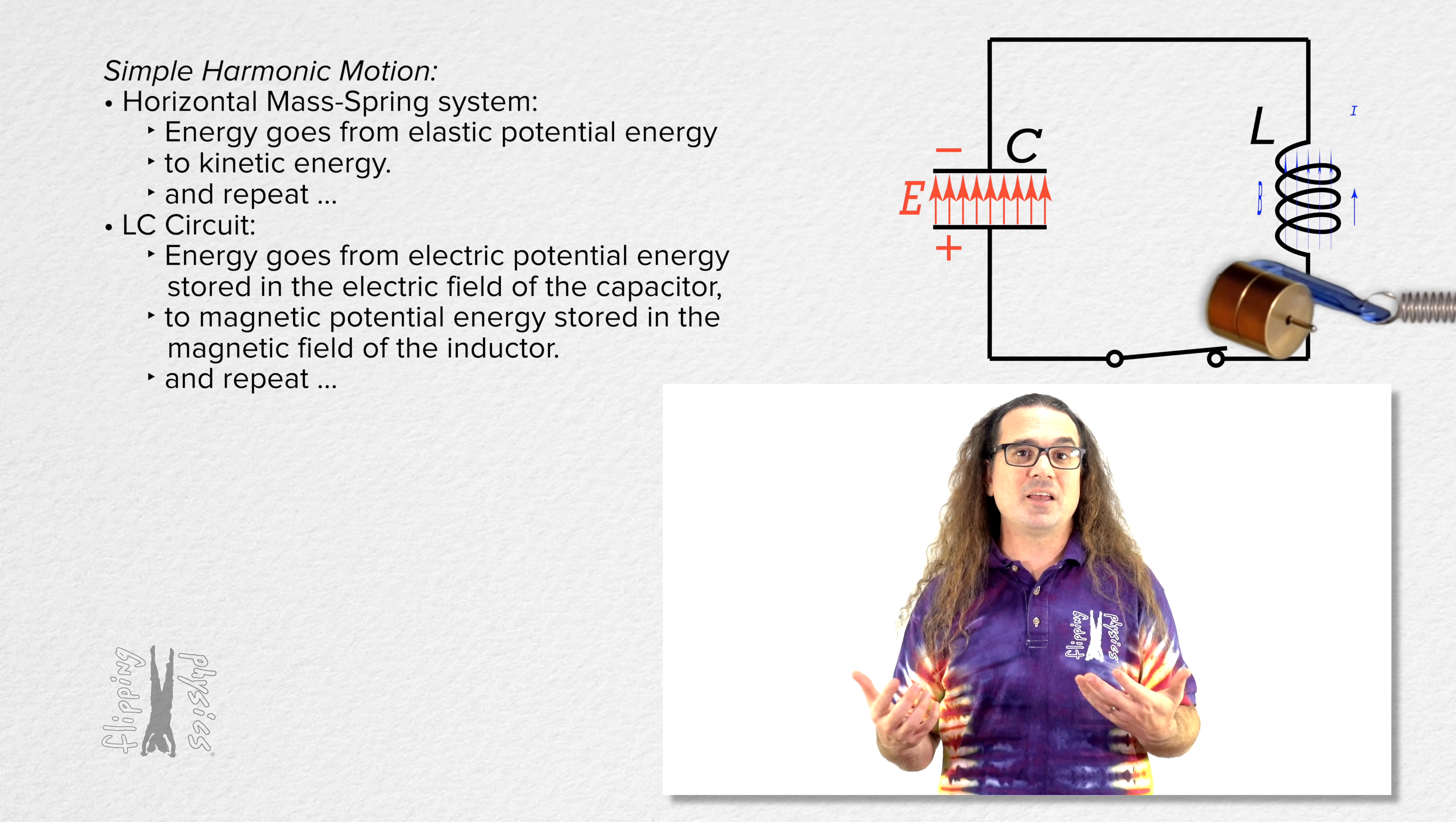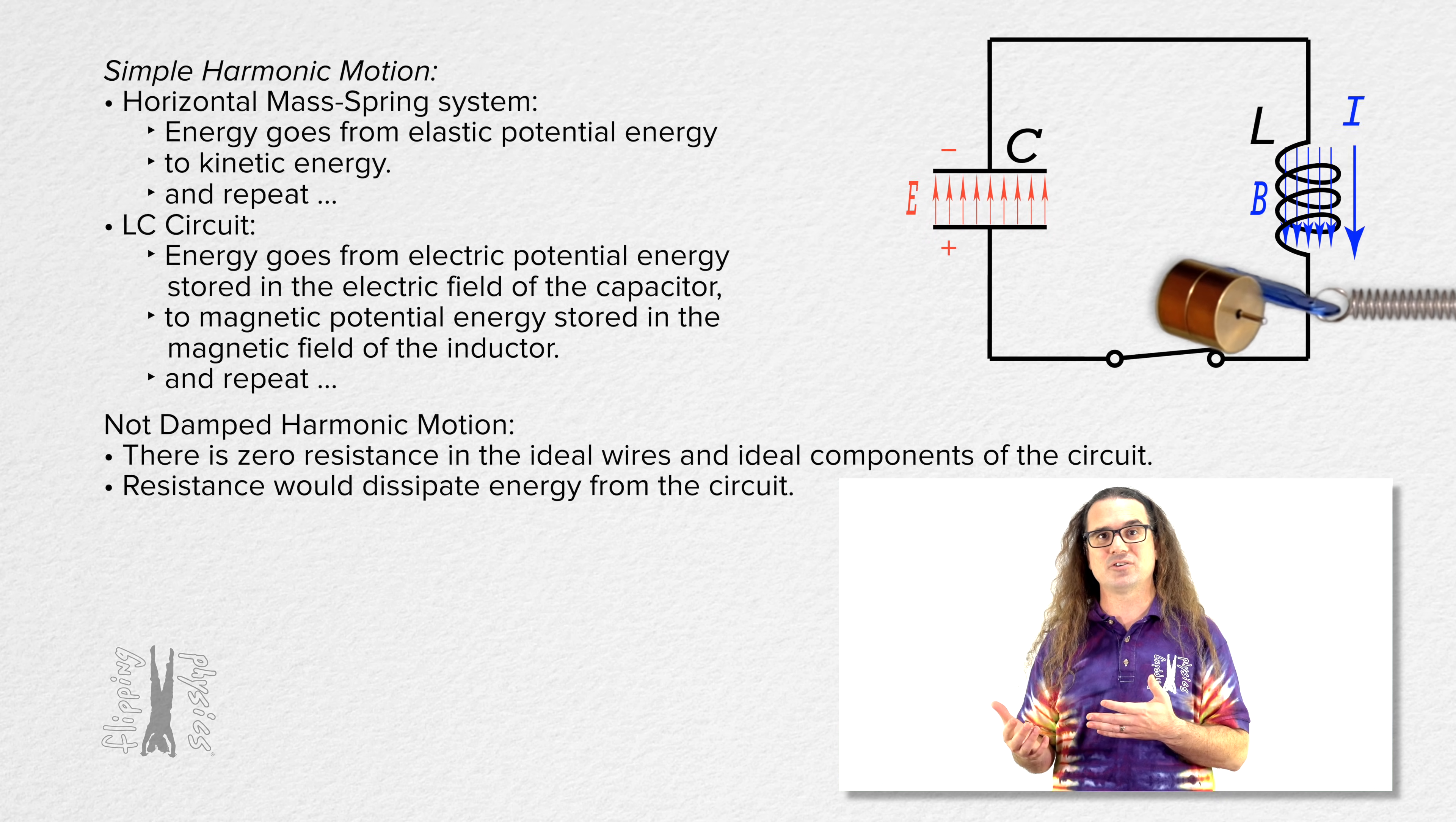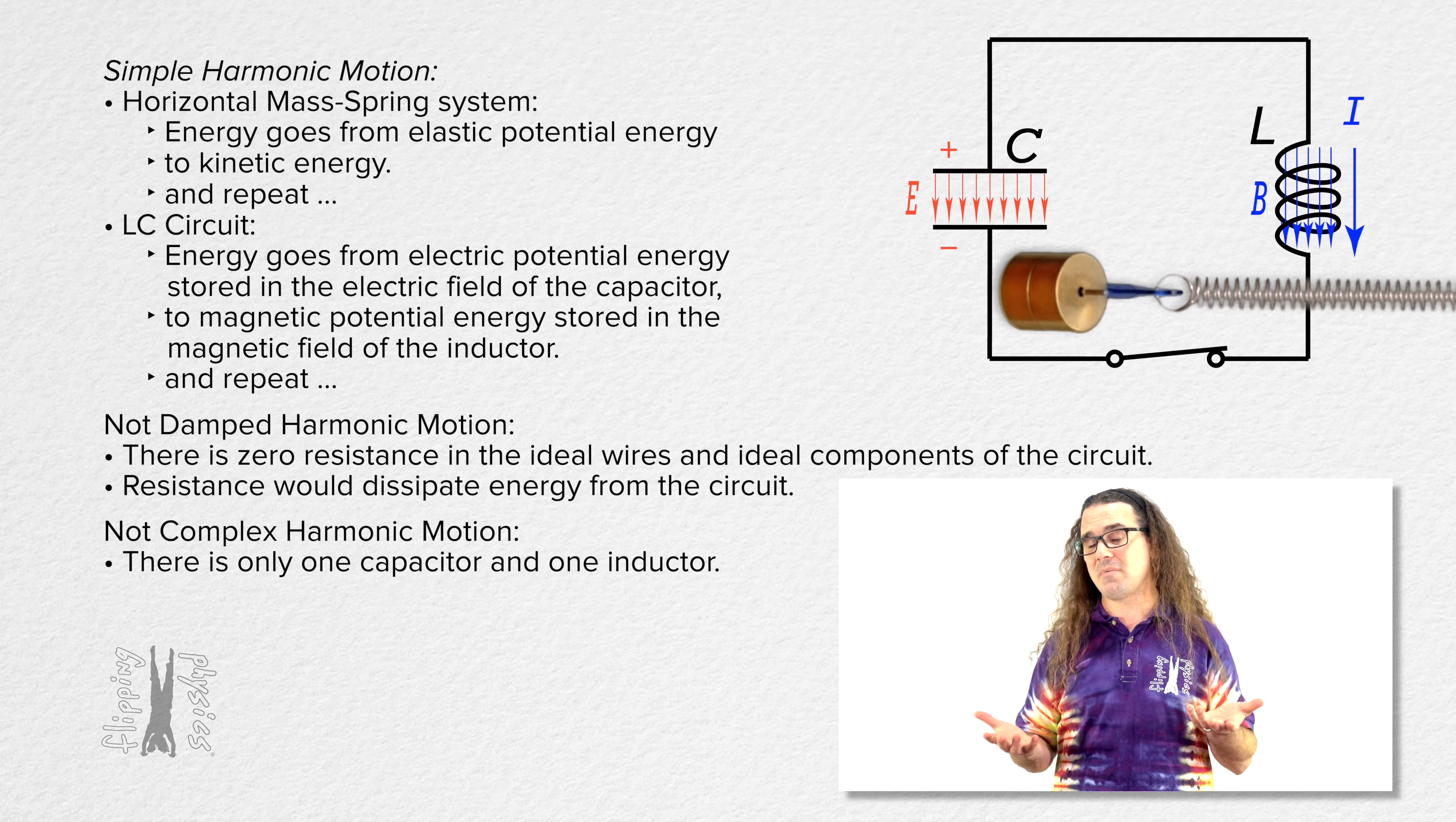They are both examples of simple harmonic motion. I still don't think it looks simple. Yeah, well, it's not damped harmonic motion because there is zero resistance in the wires of this LC circuit. Resistance in the circuit would dissipate energy from the circuit. And it's not complex harmonic motion because there's only one capacitor and one inductor and not some complicated combination of multiple inductors, capacitors, and resistors. So yeah, an ideal LC circuit is simple harmonic motion.